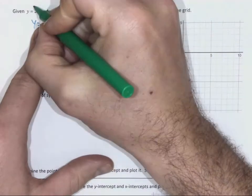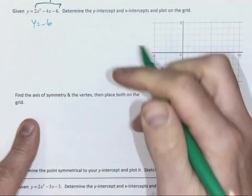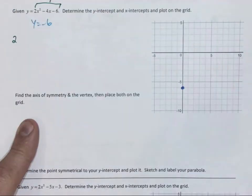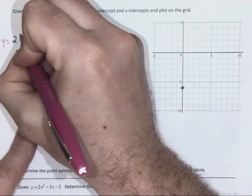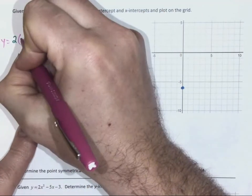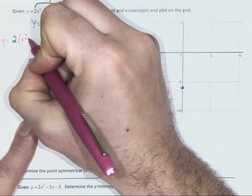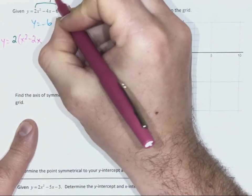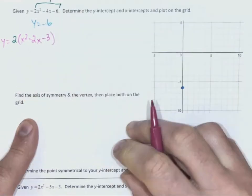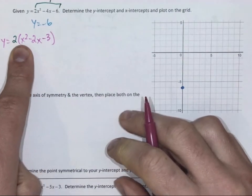Now I'll notice that there's a common factor. They are all divisible by 2. So when I take that out, 2x-squared divided by 2 is x-squared. Negative 4x divided by 2 is negative 2x. Negative 6 divided by 2 is negative 3. Now I'm dealing with a simple trinomial.